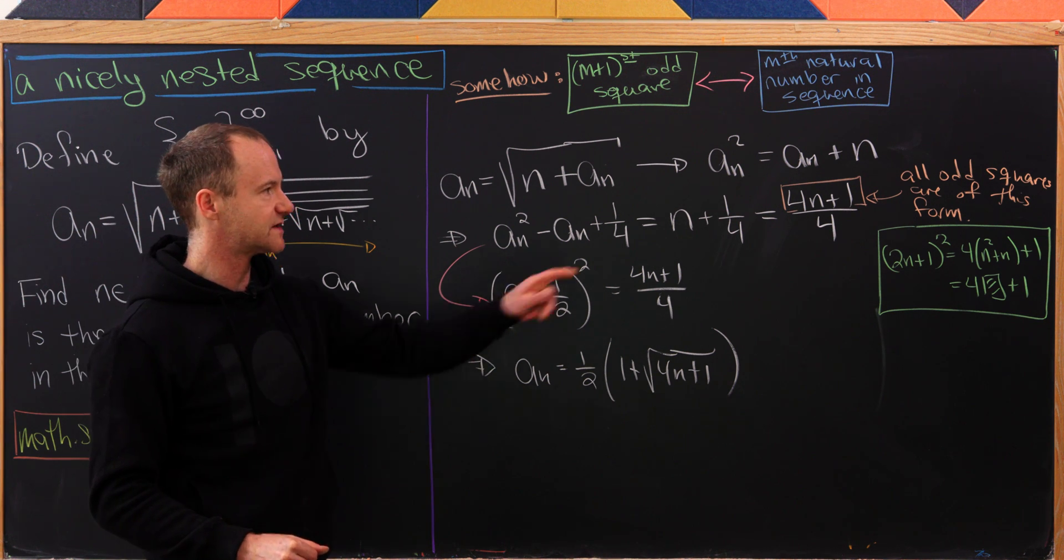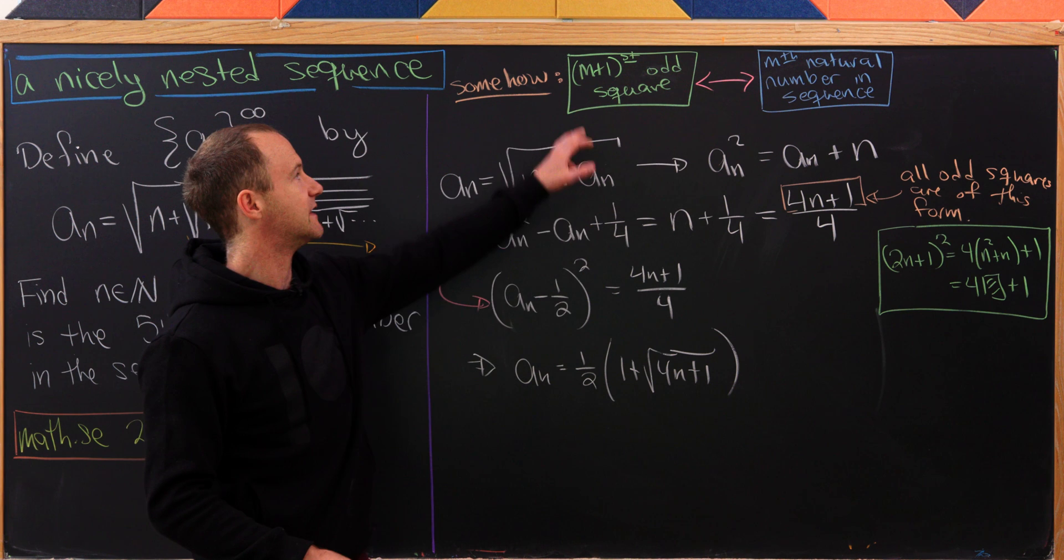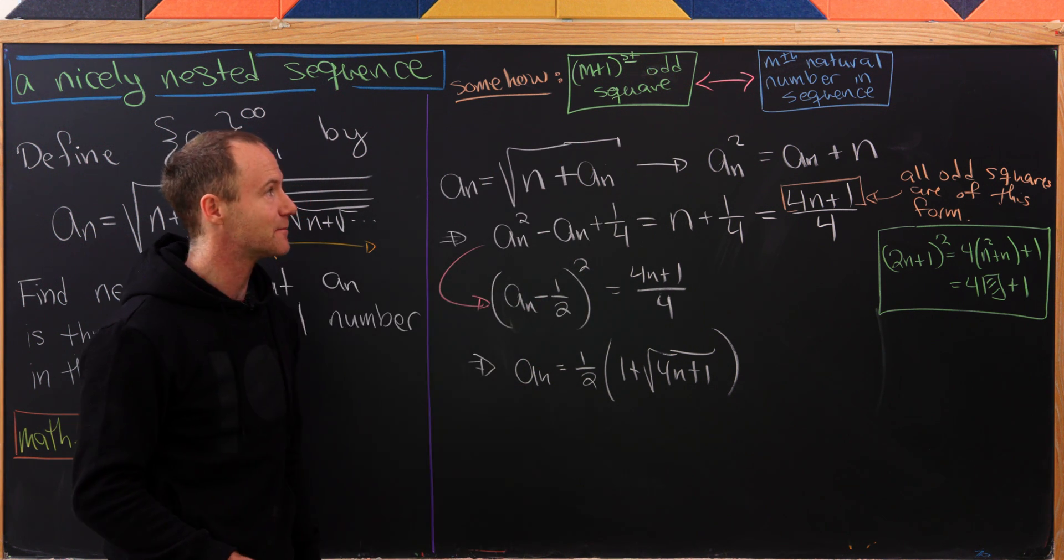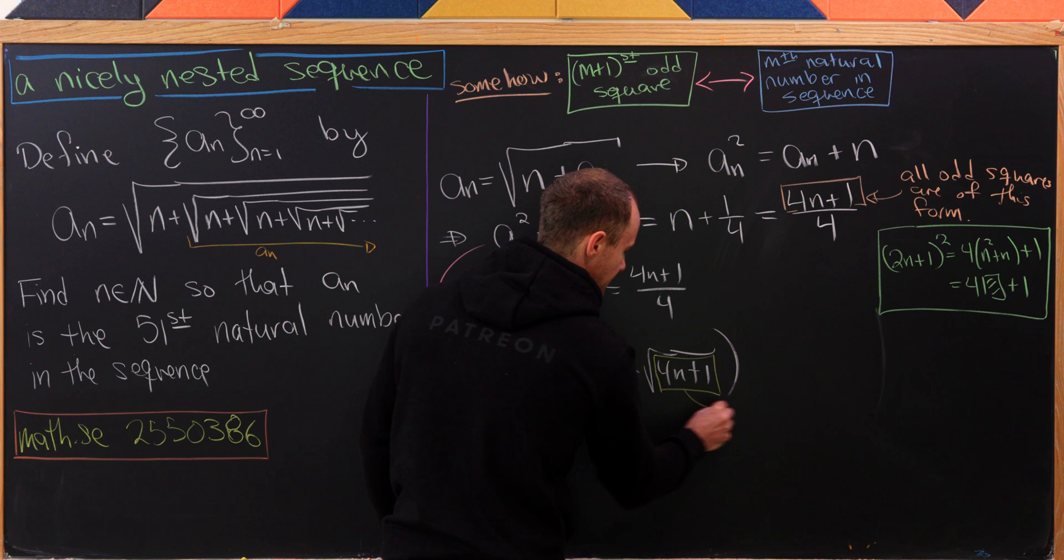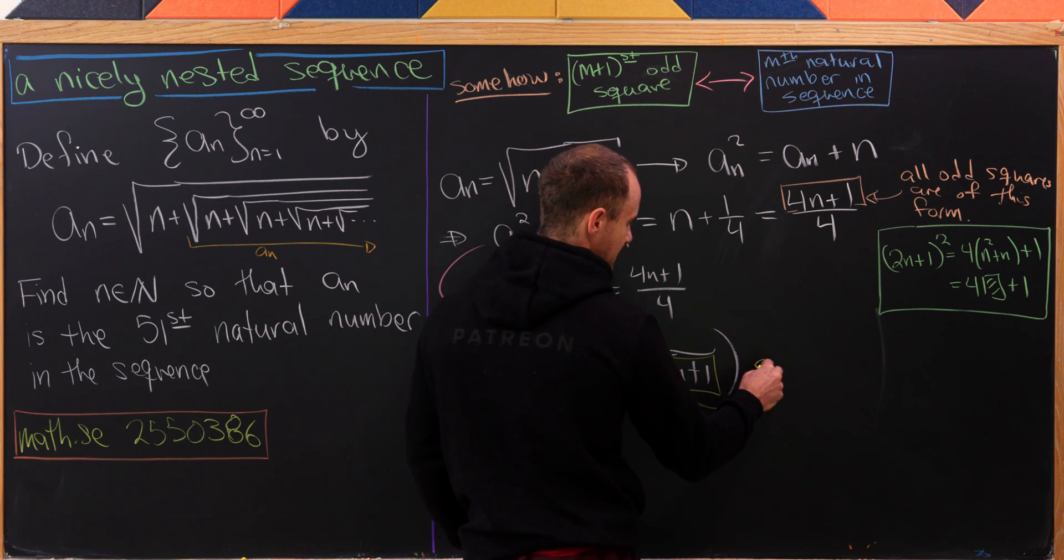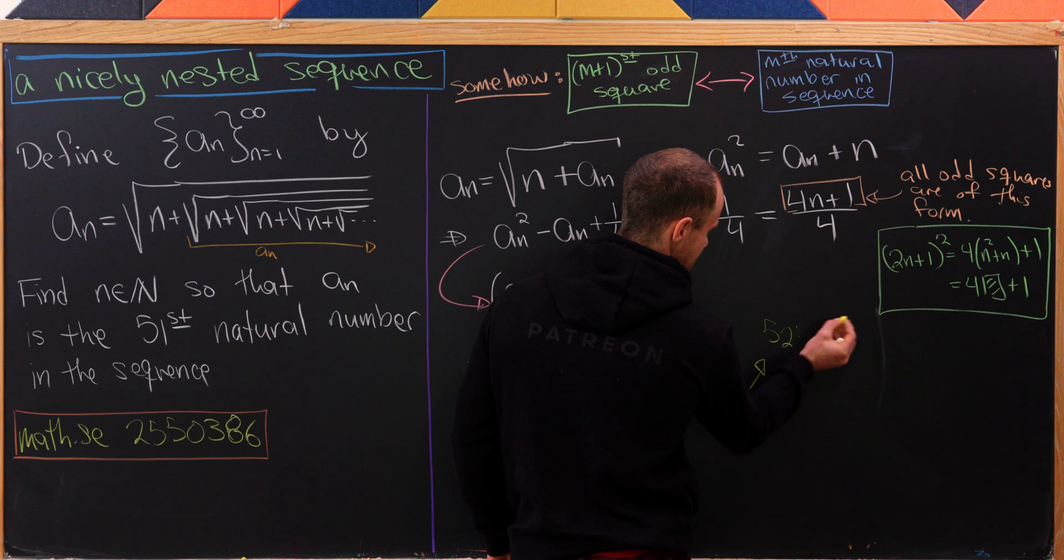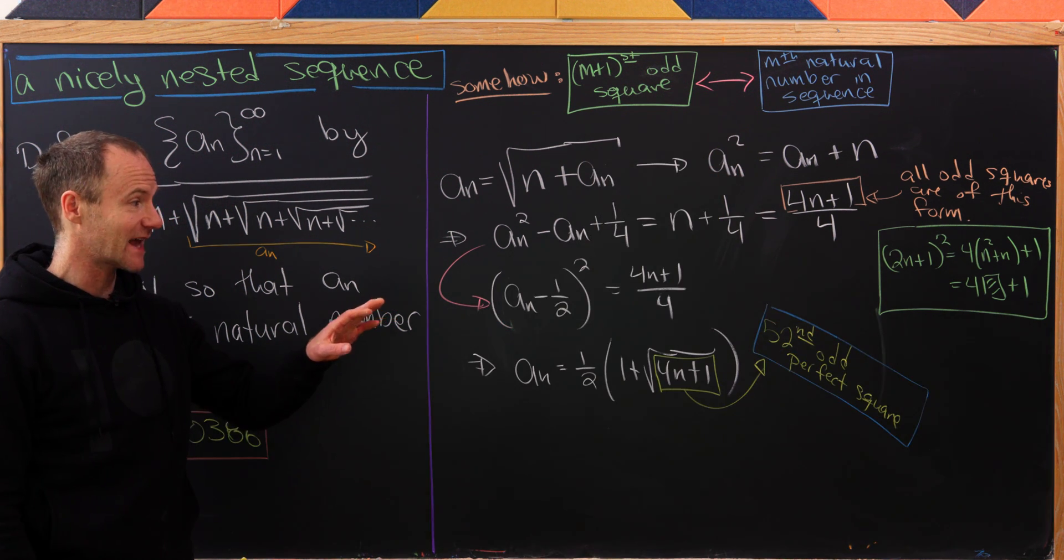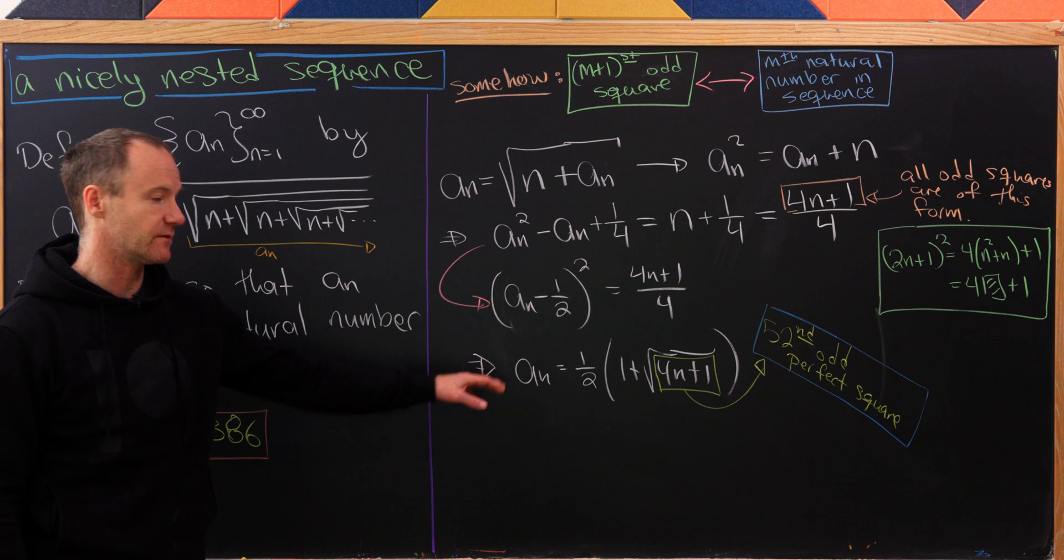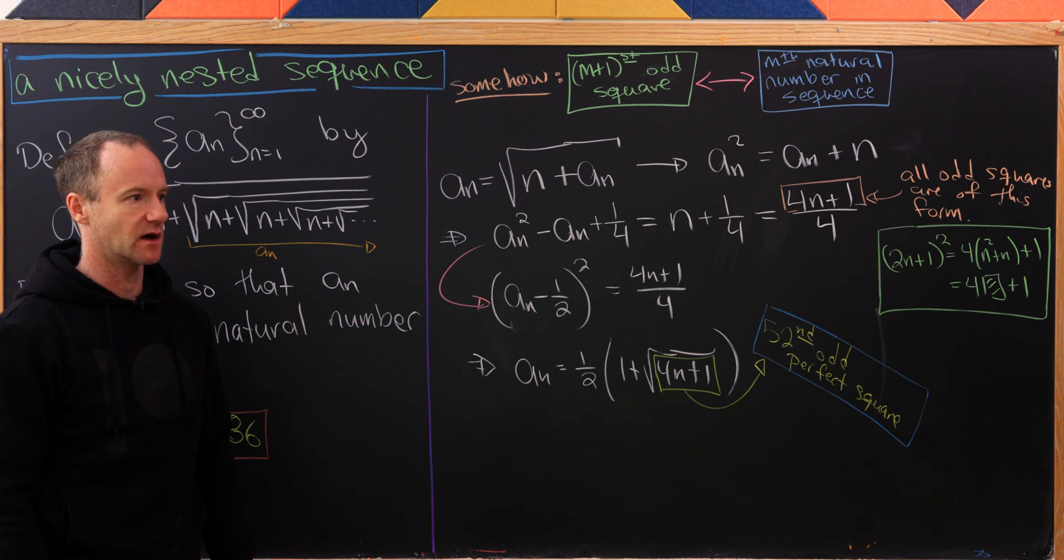Now since all odd squares are of this form and the (n+1)st odd square will give us the nth natural number in this sequence, what we want to do is find n so that this is the 52nd odd perfect square. That 52nd odd perfect square will make this a natural number.